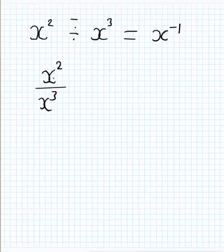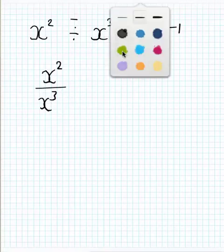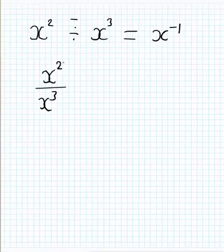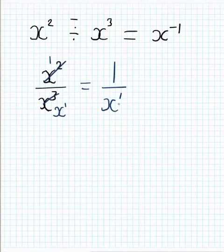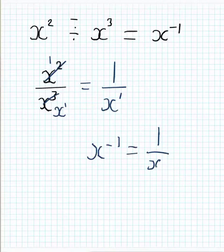Calculating it directly: I have 2 x's on top and 3 on the bottom. I can cancel 2 from each side, leaving nothing (a 1) on top and 3 take away 2 leaves 1 x, or x to the power of 1, on the bottom. Writing this out, we have 1 over x to the power of 1. I'll make the 1 visible to emphasise it's a positive 1. Since both forms of the question are the same, both answers are equal — so x to the power of negative 1 equals 1 over x to the positive power 1.